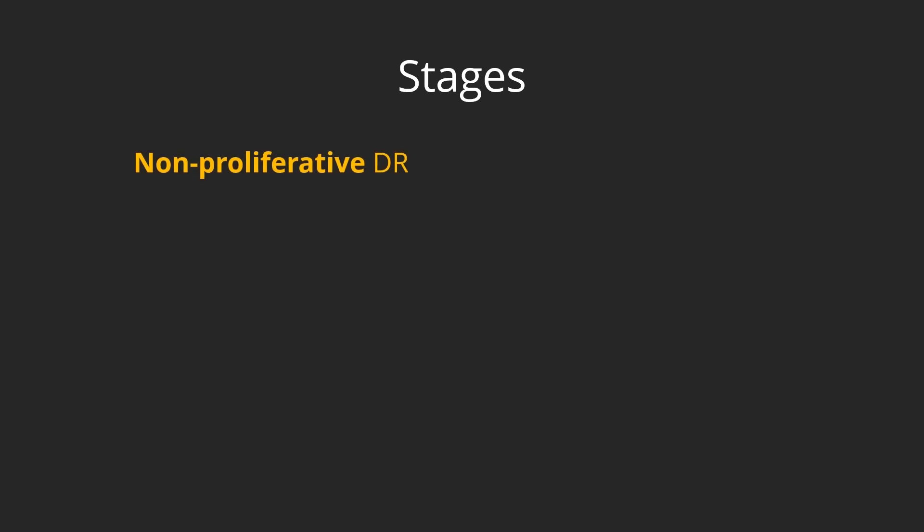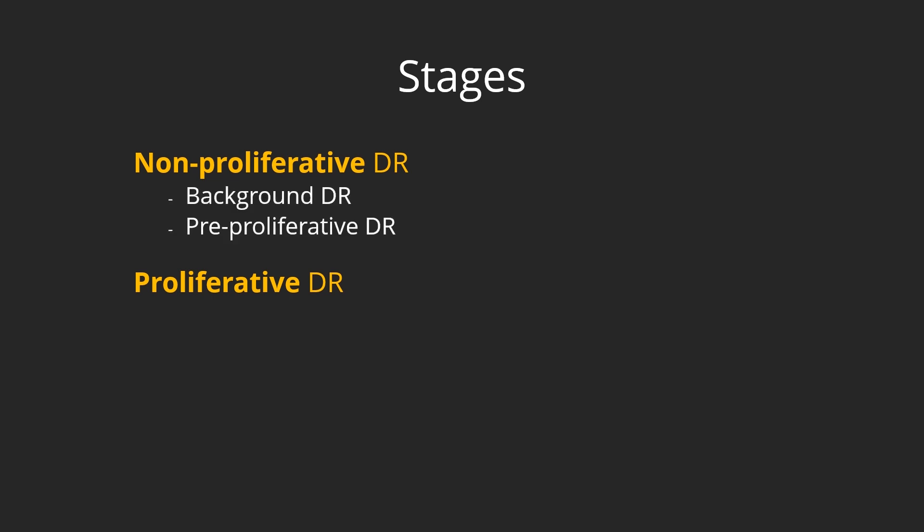Stages of diabetic retinopathy. Diabetic retinopathy is a progressive condition, often classified into two stages: non-proliferative and proliferative retinopathy. Non-proliferative can be further subclassified into background diabetic retinopathy and pre-proliferative diabetic retinopathy. There is another entity known as maculopathy, which we will discuss after the first two stages.